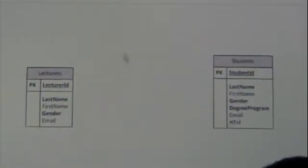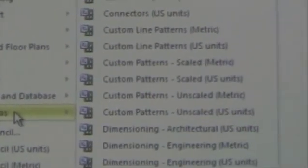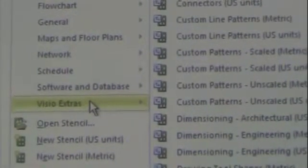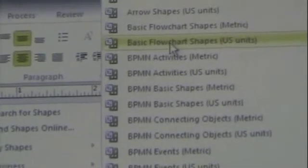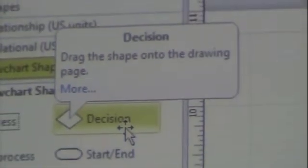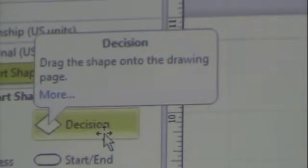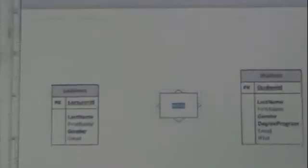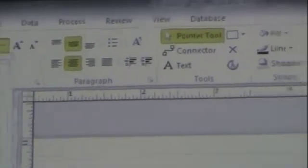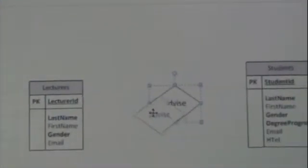In order to get the diamond, I get it from more shapes, flow chart. Basic flow chart shapes. US or metric, it doesn't matter. And I get another template. And I normally use the diamond, which in the flow chart symbol represents a decision. But in this case, I use it to represent a relationship. So, I just take that. I drag that out. That's my relationship. I double-click on it. And the relationship here is Advise. If I want to, I can change the font size so that it appears larger. It appears between the two. Next, what I have to do is connect them to each other.